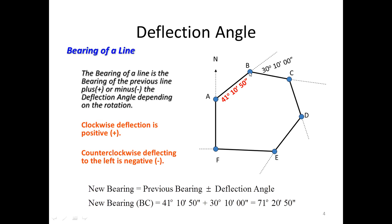Let's look at finding the bearing of BC. To find the bearing of BC, we have to be given a bearing — which is given in red here for AB: 40 degrees, 10 minutes, 50 seconds — and we are given a deflection angle also. In some cases we have to find the deflection angle, but that comes in further lessons. Because we are deflecting clockwise, this deflection angle is positive. If we were deflecting the other way, it would be negative.